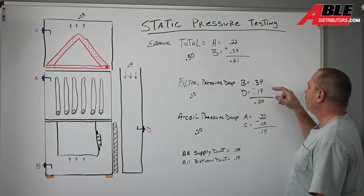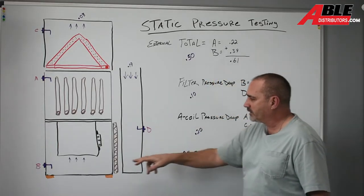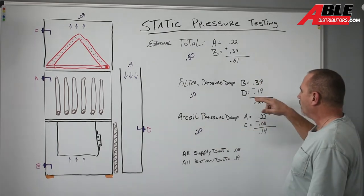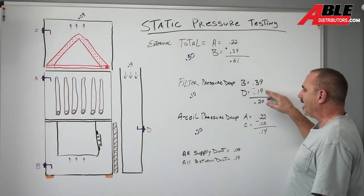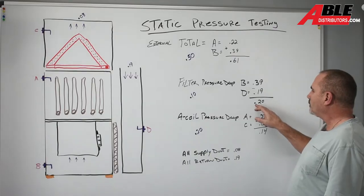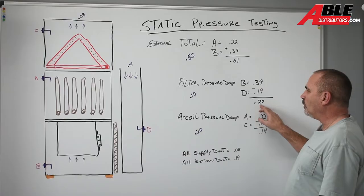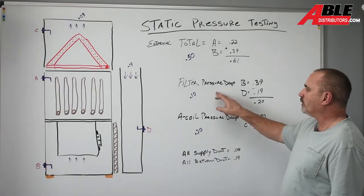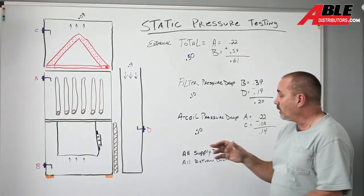So in this situation B again was 39, that's not going to change from what it was before. D I had 19 here. So that means we're losing 0.2 across the filter. Most filters are 0.1, so we know we got an issue there.